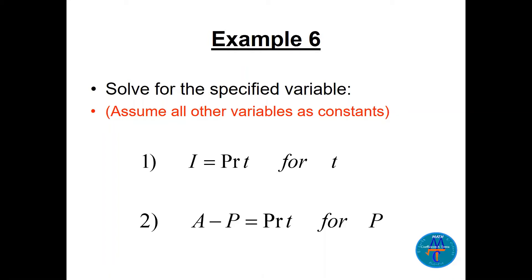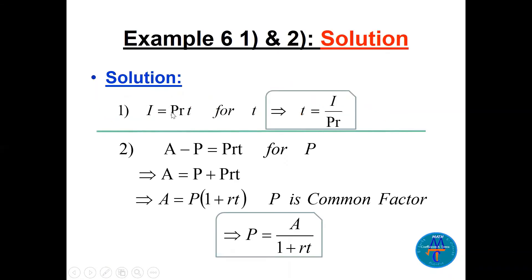Now let's look at solving for a specified variable. Some equations have more than one variable, like I = PRT. We pick one variable and isolate it. For I = PRT, solve for T: divide both sides by PR, giving T = I / (PR). P and R are treated as constants.